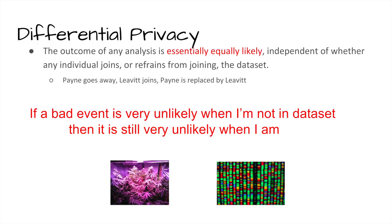So if a bad event is very unlikely when I'm not in the data set, it will be very unlikely even if I am, because the probability distribution on outputs won't change much. For example, if one is analyzing power consumption data and a bad outcome is that the police come and bust me for use of grow lights, if that's very unlikely without my data included, it will be unlikely with my data included.